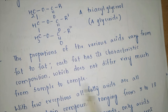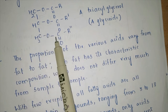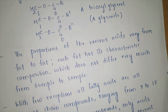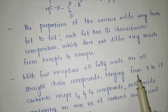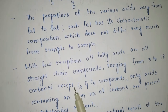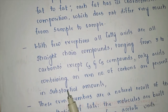Each fat has its characteristic composition which does not differ very much from sample to sample, because they are derived from the glyceride system only. All fatty acids are straight-chain compounds ranging from 3 to 18 carbons, except C3 and C5, which are odd-number carbons. Generally fatty acids are present in even numbers, but C3 and C5 are exceptions.